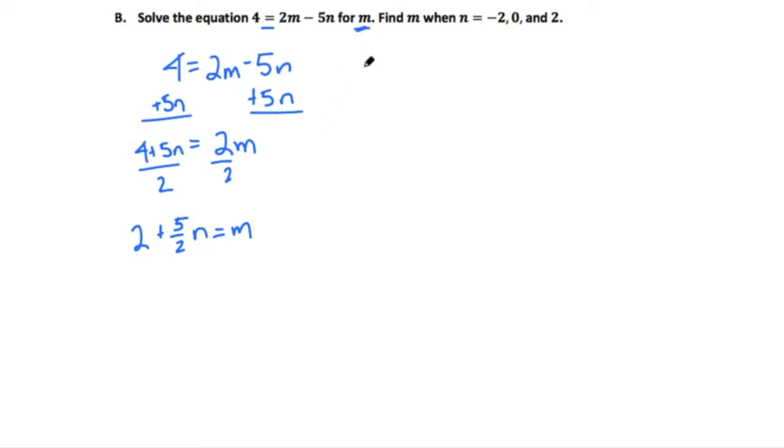That means we did the first step, the first part of this process. Now, we're trying to find m when n is these different values. So, I'm going to rewrite our equation over here. m equals. I'm going to put it in standard form with the variable term first. Okay. There's our equation just rewritten.